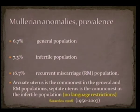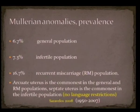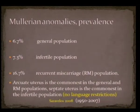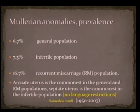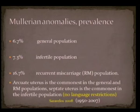In the study of Saravelis, published in 2008, they gathered all the literature for the last 60 years without any language restrictions. They found that the prevalence of Müllerian anomalies is similar between the general population and the infertile population, but it has a dramatic increase in prevalence among the recurrent miscarriage population. In the general and recurrent miscarriage population, arcuate uterus is the commonest form, but in the infertile population, the septate uterus is most common.